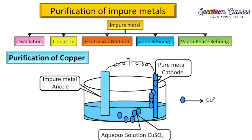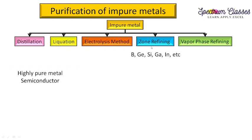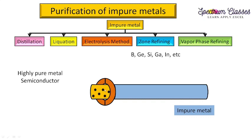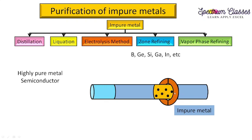The next method is zone refining. Through this method we purify boron, germanium, silicon, gallium, and indium. Since germanium and silicon behave as semiconductors, this method is especially important for obtaining highly pure semiconductor materials. In the process, a bar of impure metal has a circular heater placed around it. The heating causes that section of the metal to melt, and as it does, impurities are left behind in the solid form. The heater moves along the bar, so the molten zone moves with it.